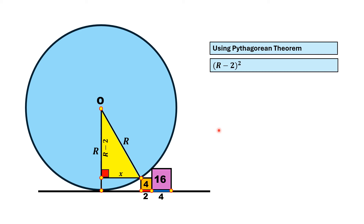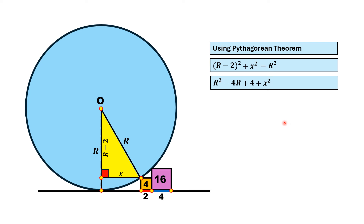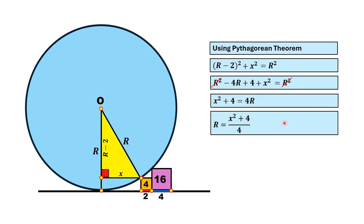Applying the Pythagorean theorem on this right triangle, we have (r minus 2) squared plus x squared equals r squared. Expanding gives r squared minus 4r plus 4 plus x squared equals r squared. The r squared terms cancel, and after simplification we get x squared plus 4 equals 4r. Therefore r can be written as (x squared plus 4) over 4. Let us call this Equation 1.